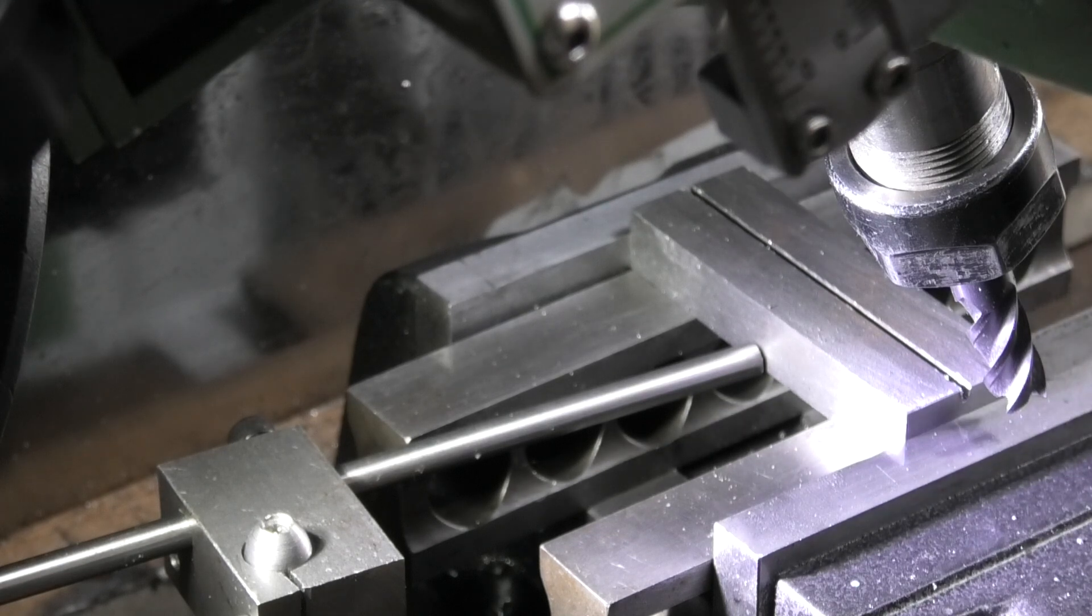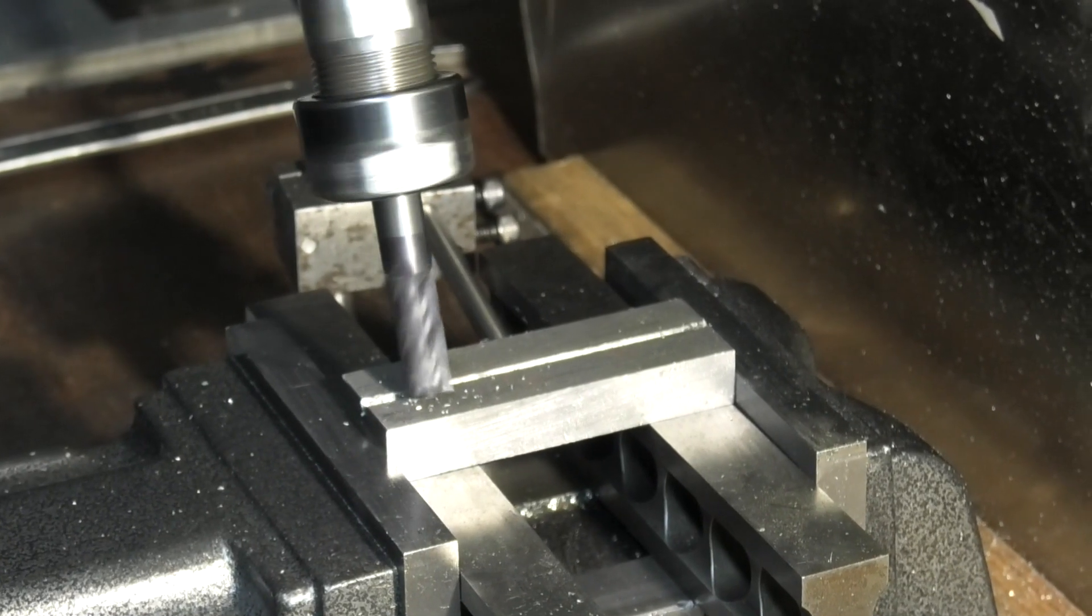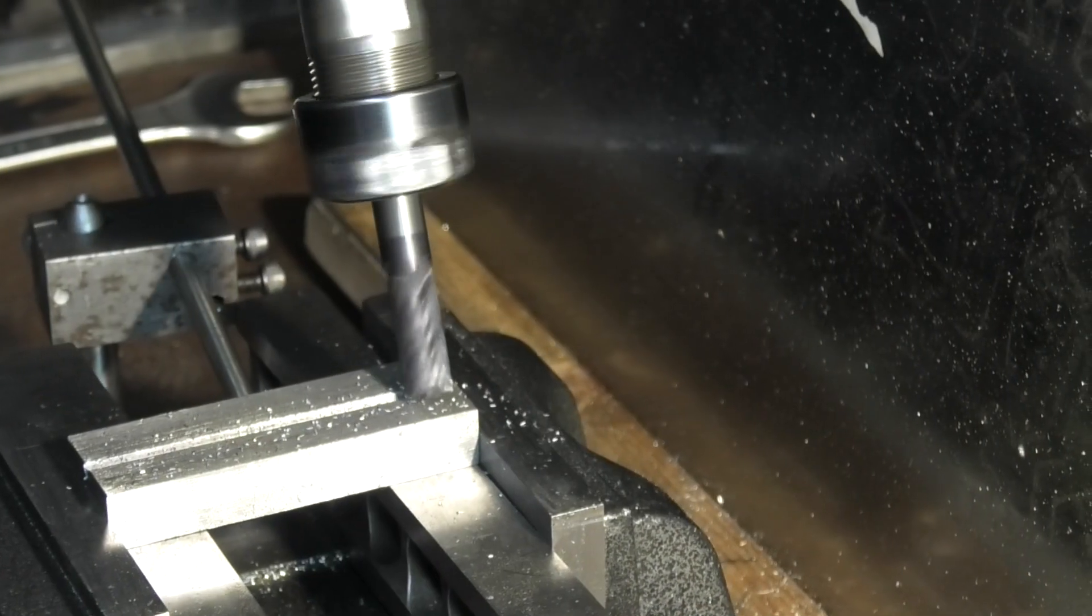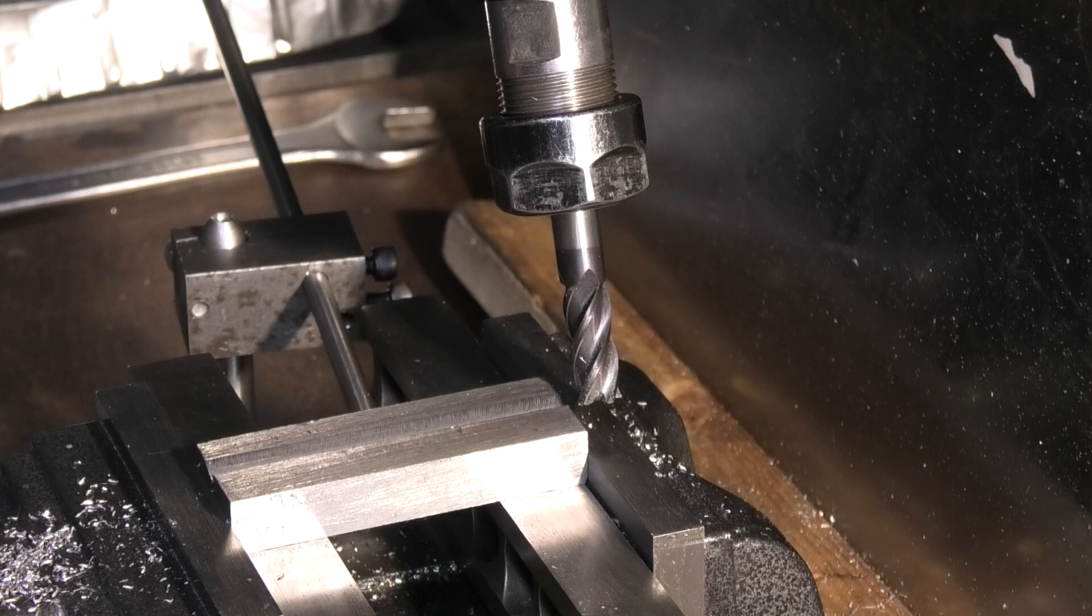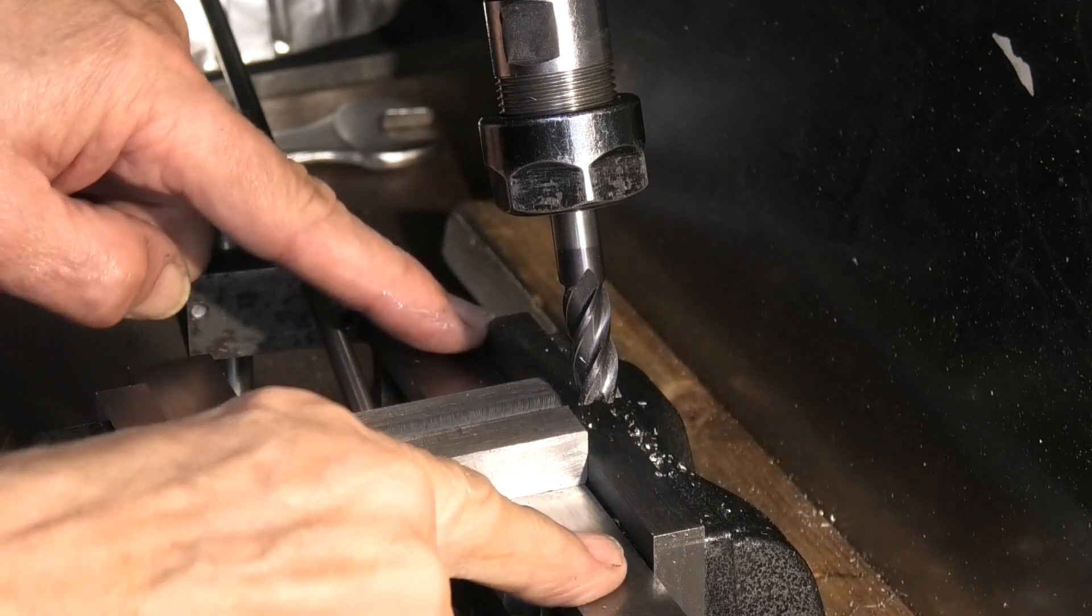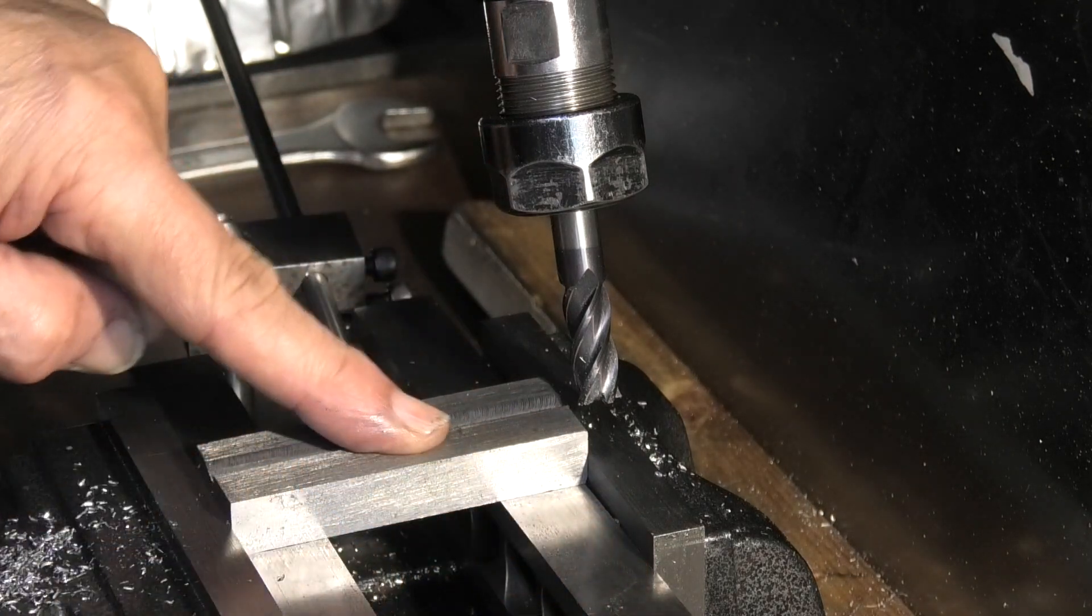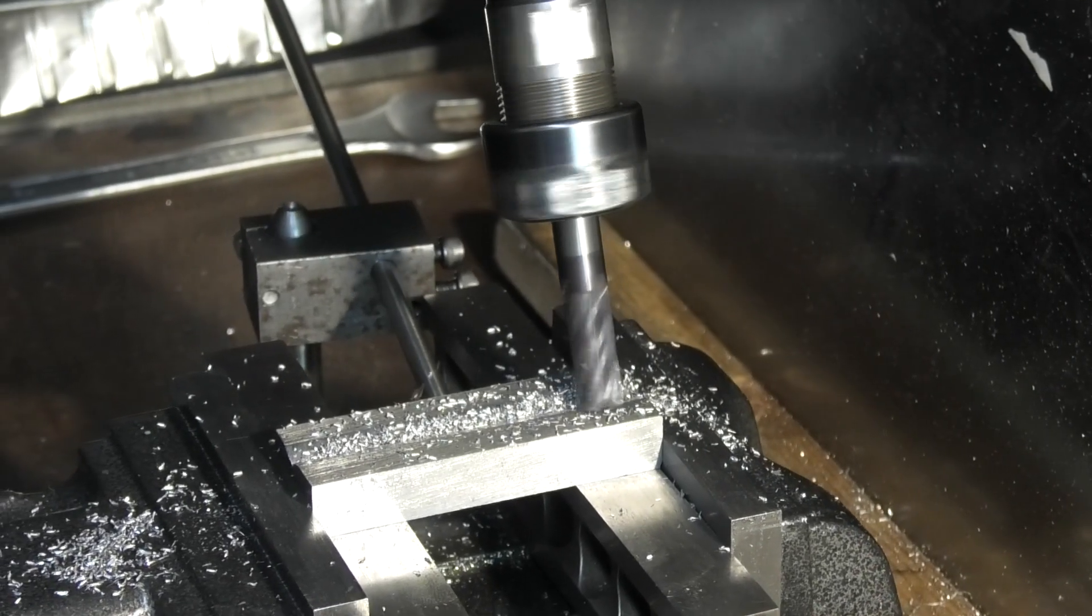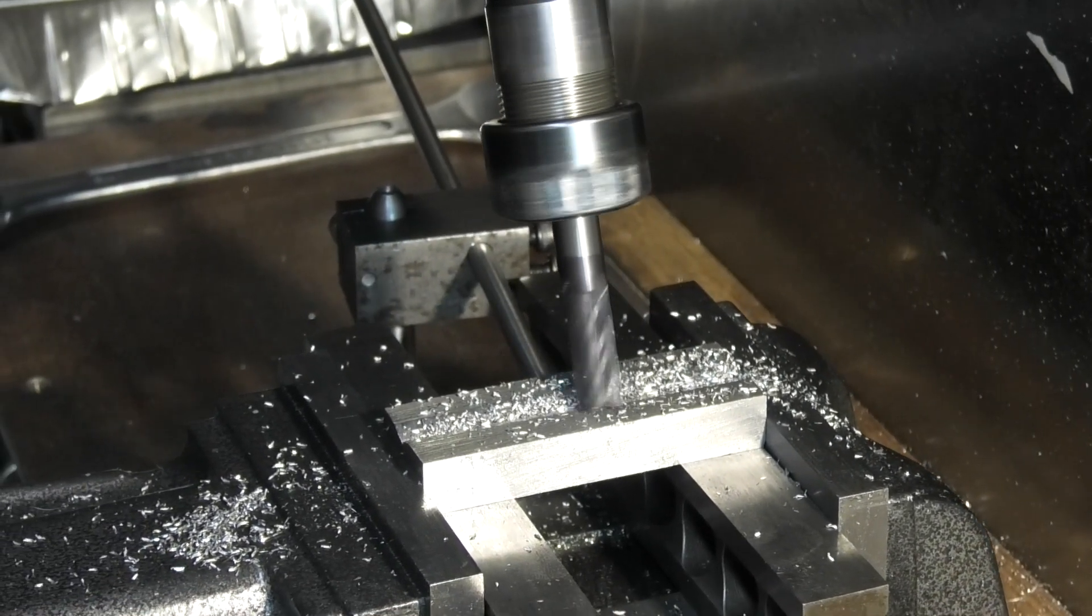Without changing any settings to the angle or the table, I'm feeding the tool down using my depth stop. I've turned it round now using the stop back here. Make sure it's onto the parallel strips. Now mill the other side. Go down to the same depth as the first side.